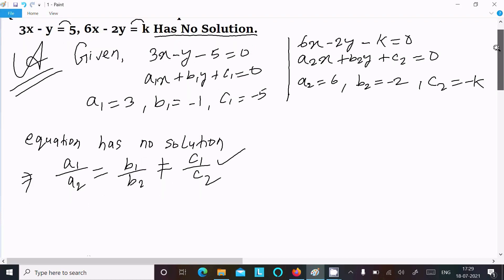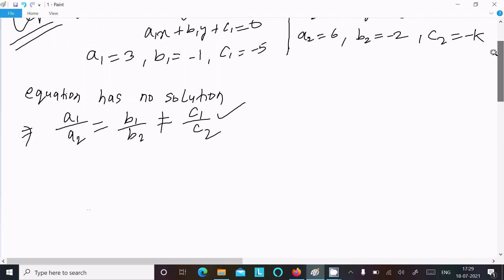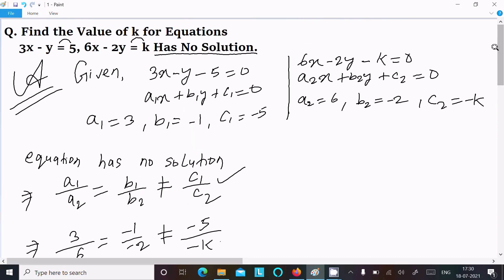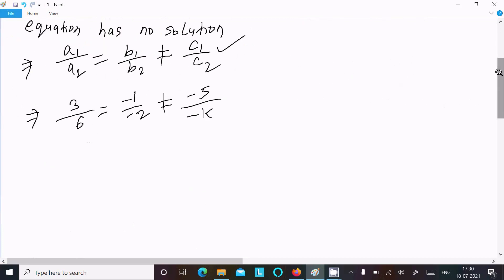After that, you need to put the values: a1 is 3, a2 is 6, b1 is minus 1, b2 is minus 2, not equal to c1 which is minus 5, and c2 is minus k. After changing signs, minus minus becomes plus.